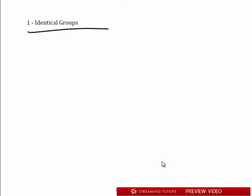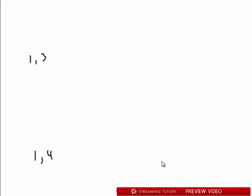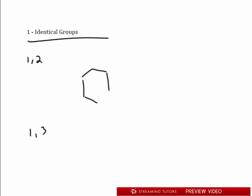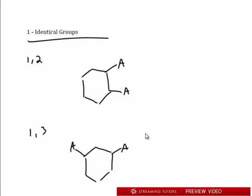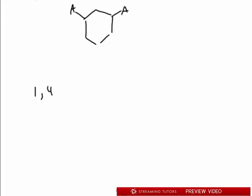When you have two groups — we usually learn with two groups first — it can be either 1,2; 1,3; or 1,4. Those are the possible scenarios. For example, if I have a ring with group A placed at adjacent carbons, that's 1,2. One,three is where A and A are two carbons apart. A and A here means they're the same thing — whether it's methyl, Br, or Cl, as long as they're identical. And 1,4 means A is here and A is directly across.